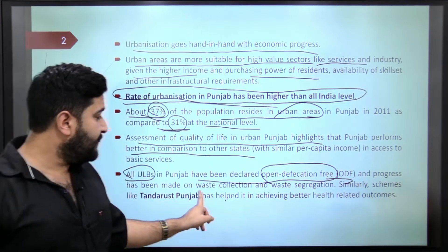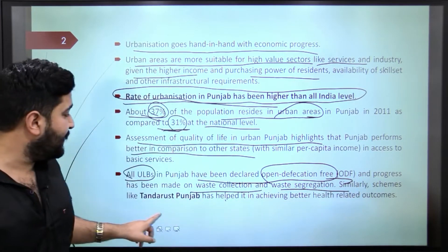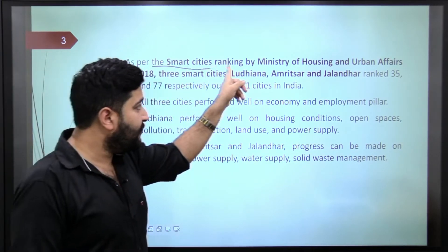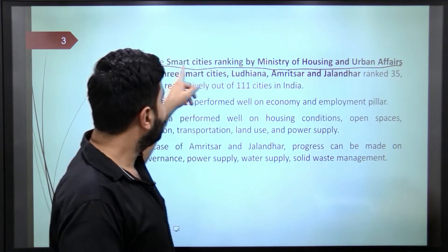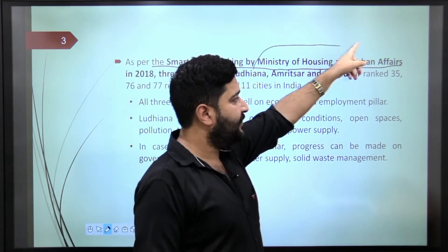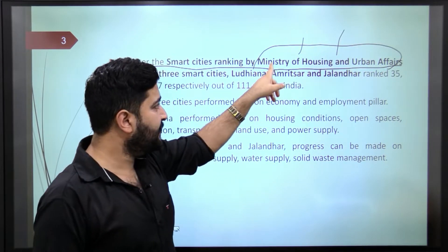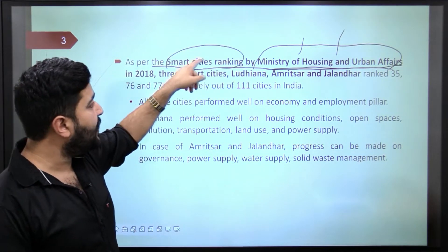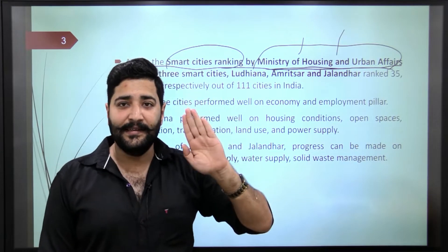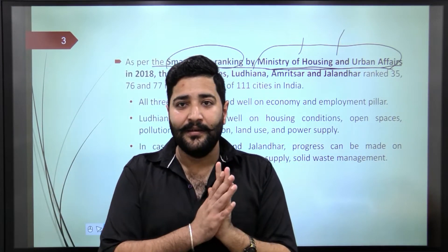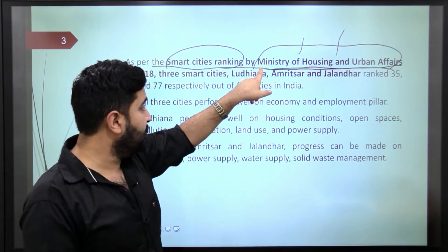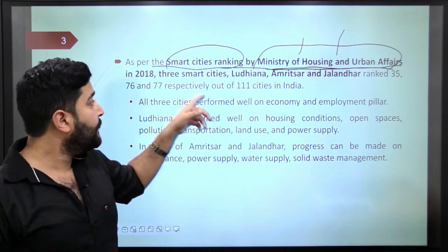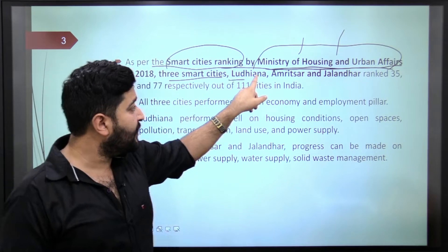All urban local bodies in Punjab have received ODF status. To improve waste collection and waste segregation, Punjab is running schemes like Tandrushth Punjab. Regarding the Smart Cities Mission, the Ministry of Housing and Urban Affairs has released the Smart Cities ranking. There are three smart cities in Punjab: Ludhiana, Amritsar, and Jalandhar.